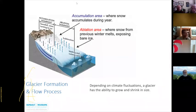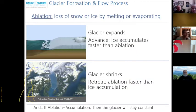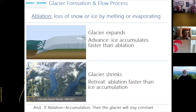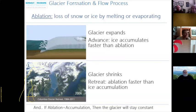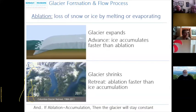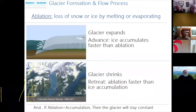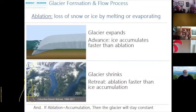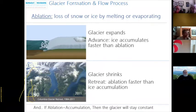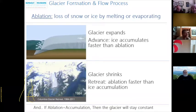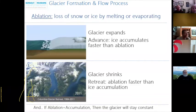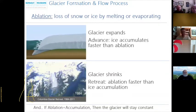Depending on climate fluctuations, a glacier has the ability to grow and shrink in size. When glacial ice develops faster than it melts or evaporates, the glacier will advance. When glacial ice melts or evaporates faster than it forms, the glacier will retreat. When ablation — the rate of loss of snow or ice by melting or evaporating — equals the rate of formation, the glacier appears to stay still. So glaciers are in a constant balancing act of snow accumulation and snow loss, constantly changing their size depending on these factors.